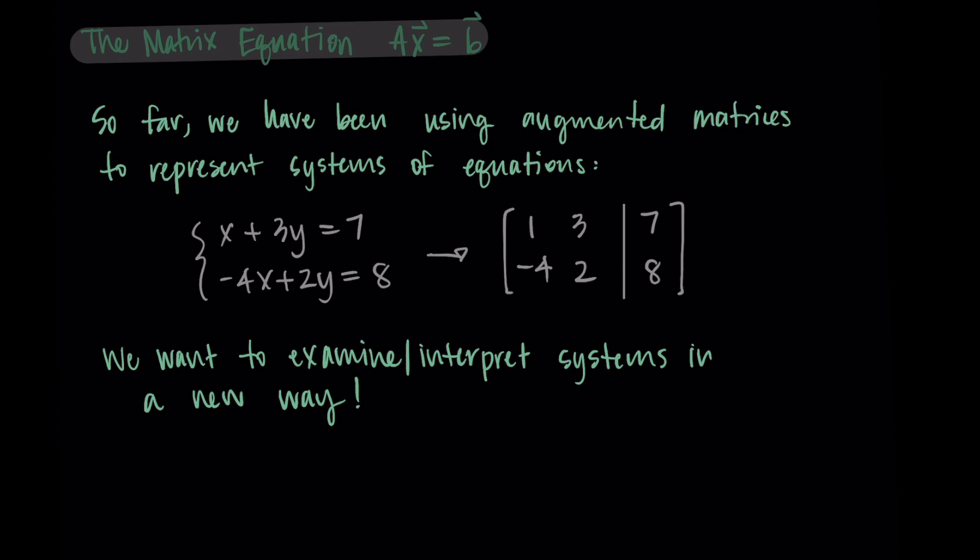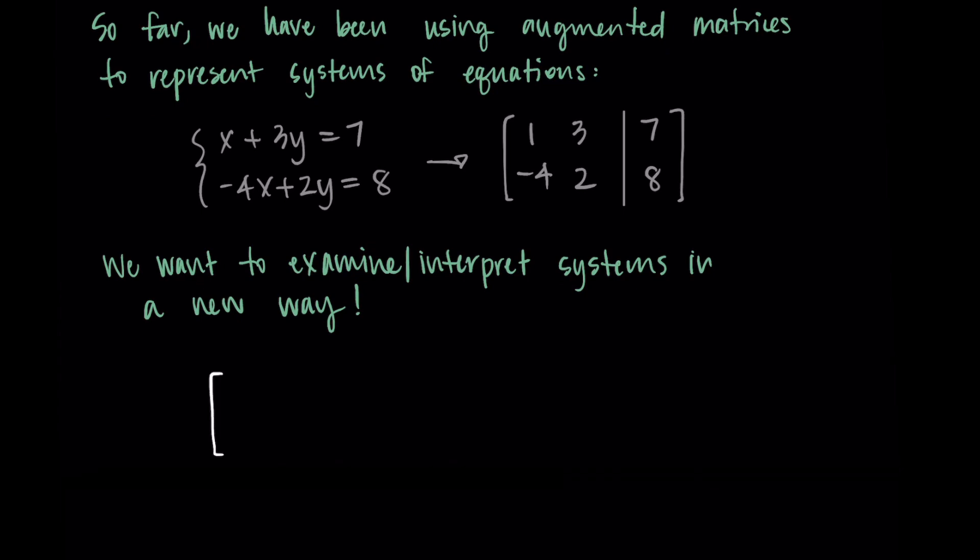So what we're going to do is take the coefficients and write them in the first matrix. So we'll have 1 3 negative 4 2, and then we're going to write this as a multiplication by a second vector and the vector is going to contain the variables from the system, so x and y.